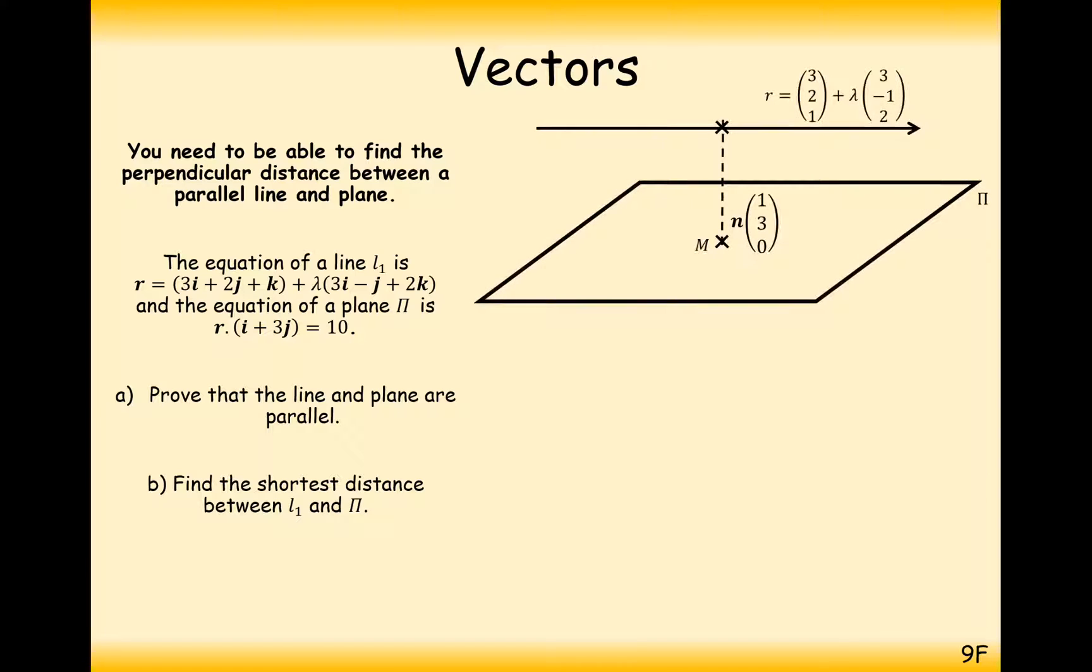So this is a diagram of the question here. We have the line with vector equation (3,2,1) plus lambda (3,-1,2). And we have the plane with a perpendicular vector of (1,3,0). So what we're looking to find is the shortest distance between the plane and the line.